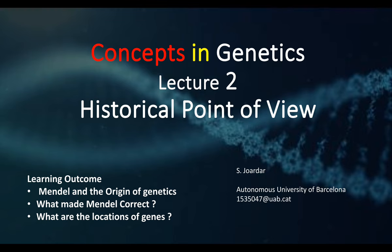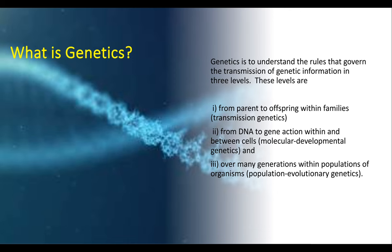From our last lecture, we also know that genetics is the transmission of genetic information. This transmission basically happens from parent to offspring, which is called transmission genetics. At the molecular level, we question how genes implement different kinds of actions in the cell so that metabolic processes run smoothly — that logic is discussed under molecular developmental genetics. Finally, population and evolutionary genetics is concerned with the flow of genetic information in different populations.